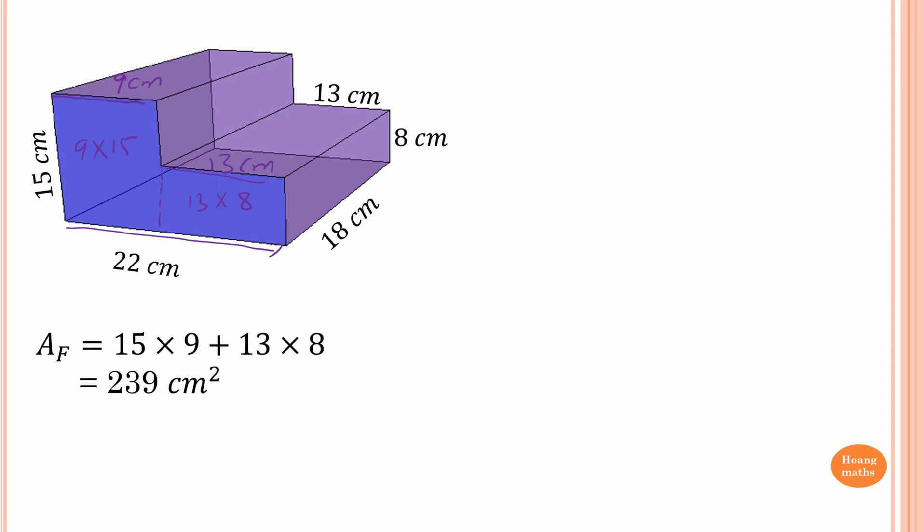The front and back panels are the same, so the combined area of the front and back is 239 times 2, which gives 478 square centimeters.